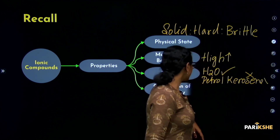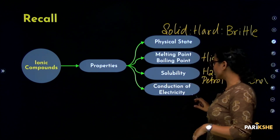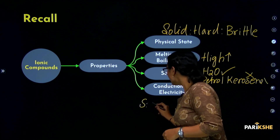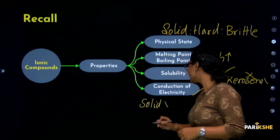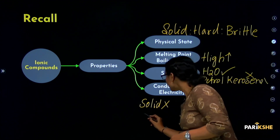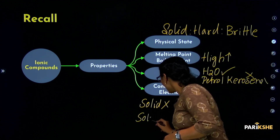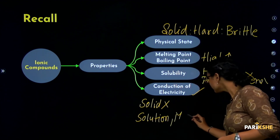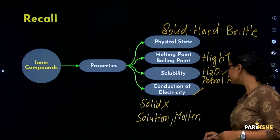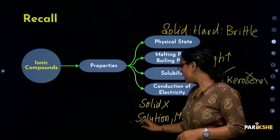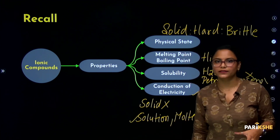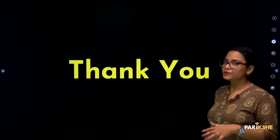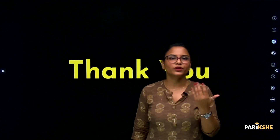Fourth property — conduction of electricity. Ionic compounds do not conduct electricity in the solid state. But in solution form or molten state, the ions are free to move, so ionic compounds conduct electricity. Understanding this concept will help you answer exam questions on ionic compounds.